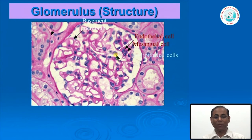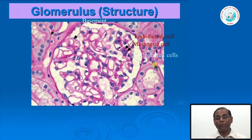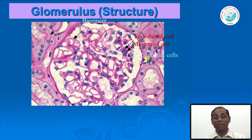Recapitulating the structure: glomerular capillaries contain endothelial cells; in between the capillary loops are mesangial areas with mesangial cells; outside the capillaries is the glomerular basement membrane; and outside that are epithelial cells. Diseases involving endothelial and mesangial cells can be classified as one kind, while diseases involving epithelial cells are classified as another type.